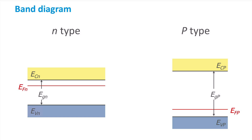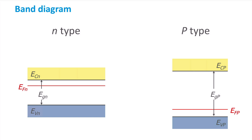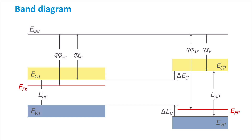When the materials are not in contact with each other, the vacuum level is drawn horizontal. We can clearly see that both materials have different work functions and electron affinities. This results in a potential energy difference in both the valence band edges and conduction band edges of the n-type material and p-type material.